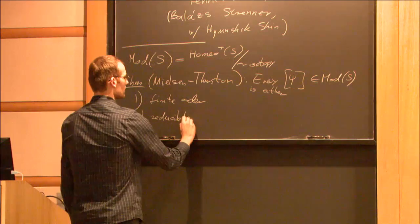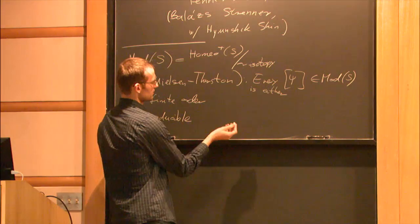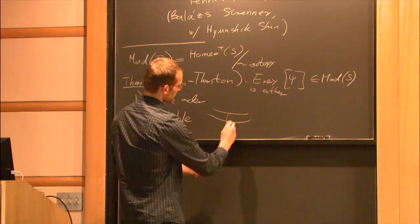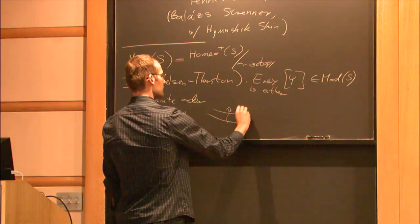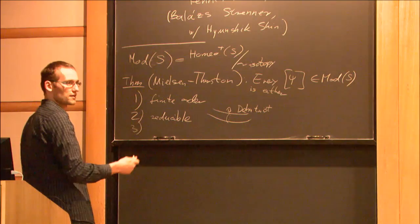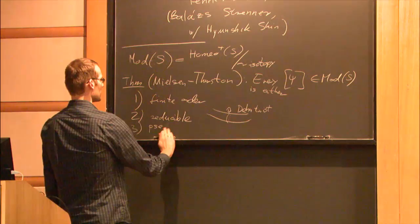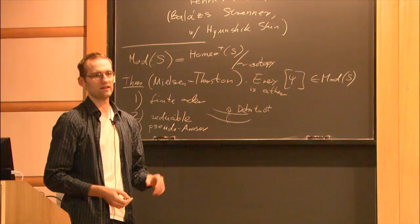Reducible means that there is some collection of simple closed curves that is fixed under the mapping class. A simple example is a Dehn twist — a Dehn twist about a curve where you cut along a simple closed curve, twist by 2π, and glue back together. But there are more complicated examples as well. The third, most generic mapping class is called pseudo-Anosov, which is everything else — one way to characterize it is those mapping classes that don't fix any simple closed curve.